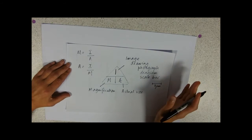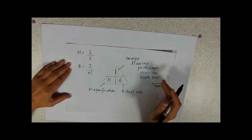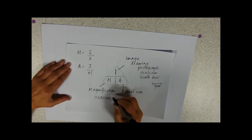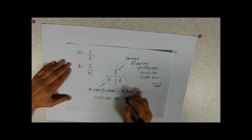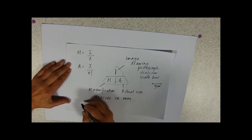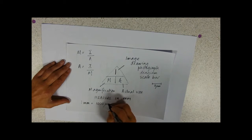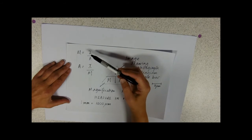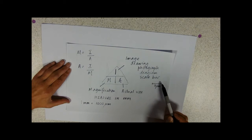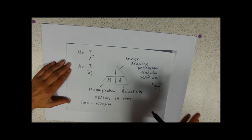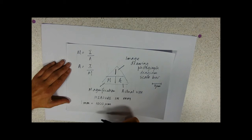You need to get into the habit of measuring in millimetres rather than centimetres, because very often we're dealing with very small sizes. One millimetre is a thousand micrometres. In magnification calculations, if your image is in millimetres and the actual size is in micrometres, you're going to have to multiply by a thousand.